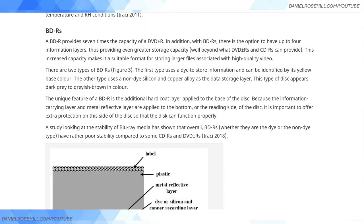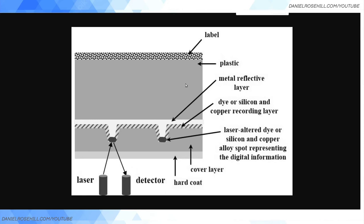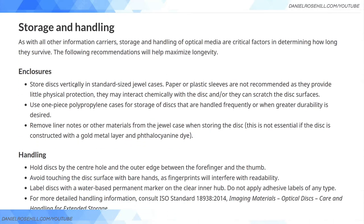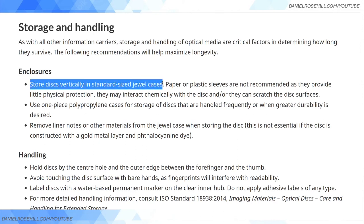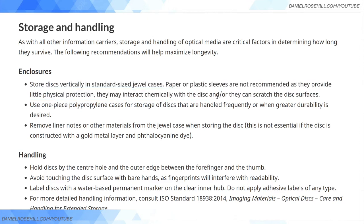Now let's look at what the Canadians say. This is from the Canadian Conservation Institute, the CCI. This is a later resource because it actually talks about BDRs — recordable Blu-rays. They give a schematic of a BDR that would be very close to what an M-Disc looks like under a microscope, showing the data layer and cover layer. Their practical storage observations: store discs vertically in standard-size jewel cases — same recommendation as CLIR. Paper or plastic sleeves are not recommended as they provide little physical protection and may interact chemically with the disc or scratch surfaces.